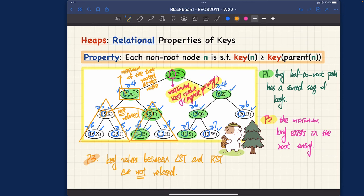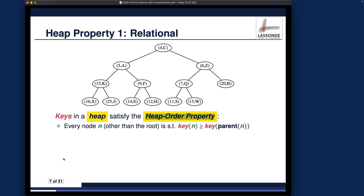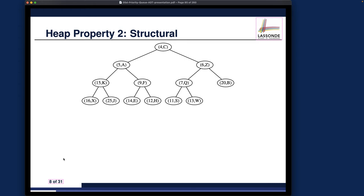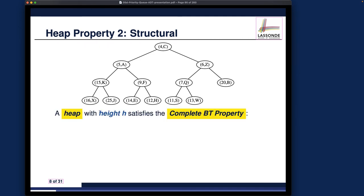Those are the three properties to understand when judging a heap. Now let's move on to the second property a binary tree must satisfy to be a heap. We just covered the relational property for key values; now let's talk about the structural property. A heap of height h must satisfy the complete binary tree property — so it must be both a complete binary tree and satisfy the relational property.